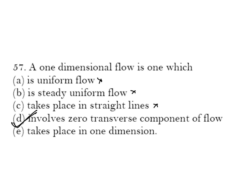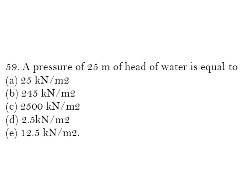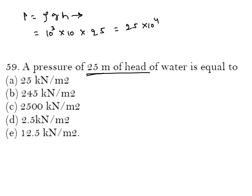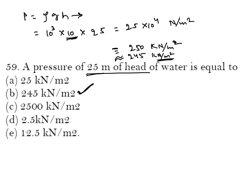Sometimes numerical problems are also asked. Given 25 metres head of water, calculate pressure. Using P = ρgH: density of water = 10³ kg/m³, g ≈ 10 m/s², H = 25 m, giving 25 × 10⁴ N/m² = 250 kN/m². This is an approximate value since g is taken as 10; the exact value is approximately 245 kN/m², but approximation is sufficient. B is your correct answer.